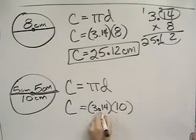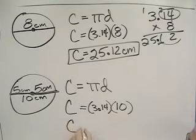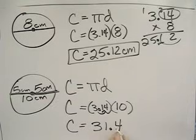And everybody knows the shortcut that when multiplying by 10, all you have to do is move that decimal over one place to the right. So in this case, the answer is 31.4 centimeters.